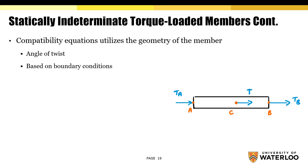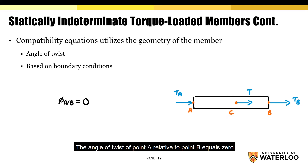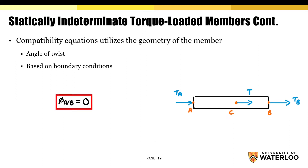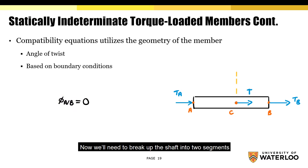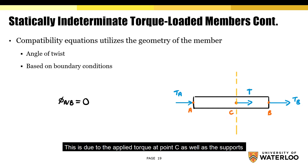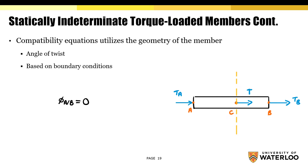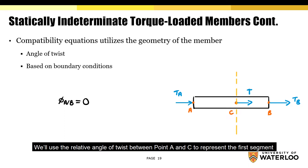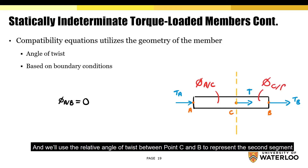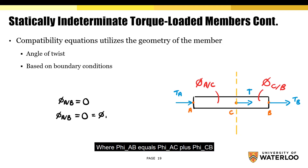Based on that, the angle of twist of point A relative to point B equals zero. We can also state this as the relative angle phi between point A and point B equals zero. Now we'll need to break up the shaft into two segments, because the angle of twist is not constant all the way through. This is due to the applied torque at point C as well as the supports. We normally take cuts at the location where torque is applied. We'll use the relative angle of twist between points A and C for the first segment, and between points C and B for the second segment. The sum of these two segments gives us: phi_AB = phi_AC + phi_CB.